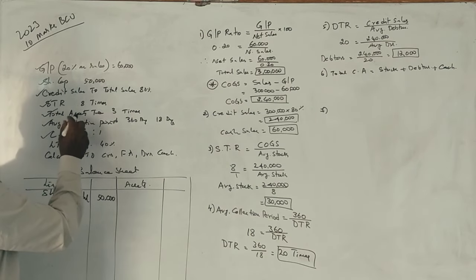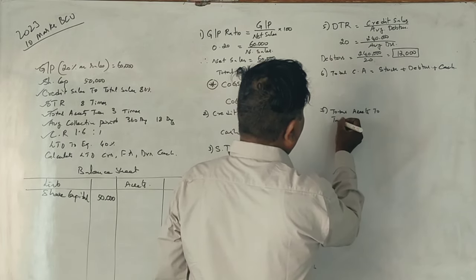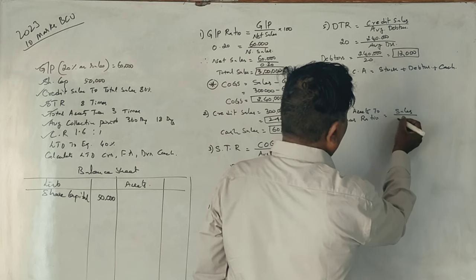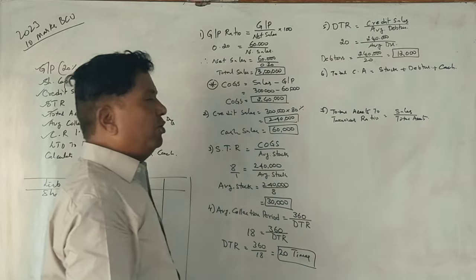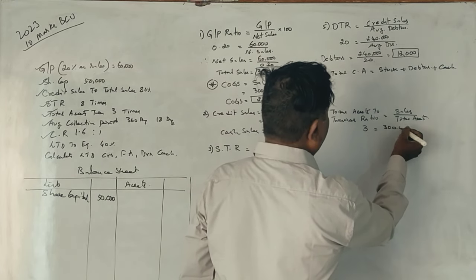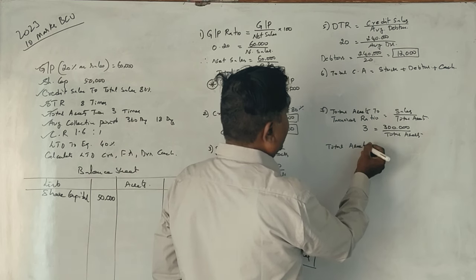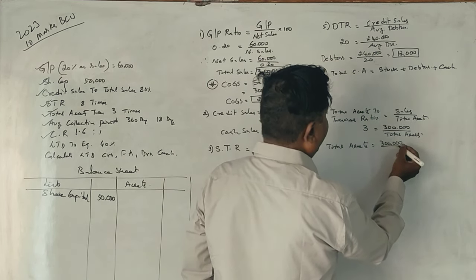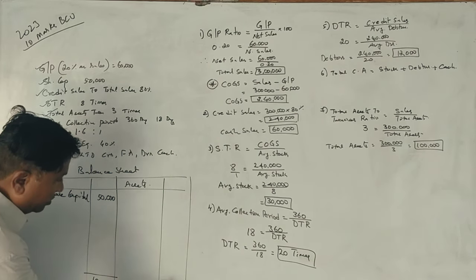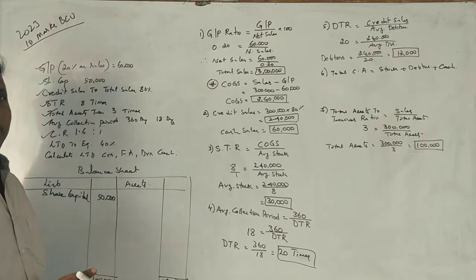Total assets turnover ratio is 3 times. Total assets turnover ratio equals total sales divided by total assets. Total assets equal Rs. 3,00,000 divided by 3, so total assets equal Rs. 1,00,000. Total assets and total liabilities both equal Rs. 1,00,000.